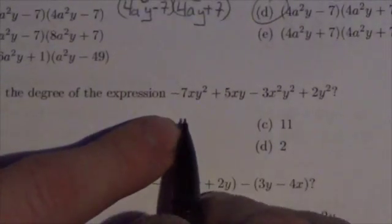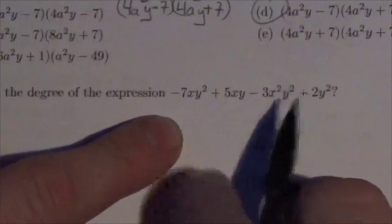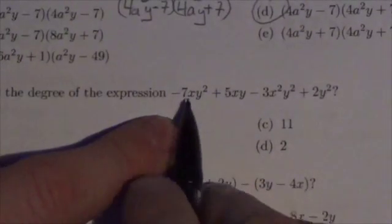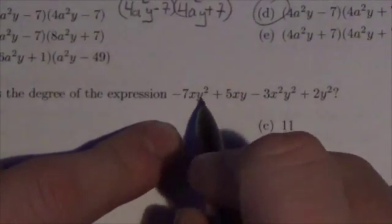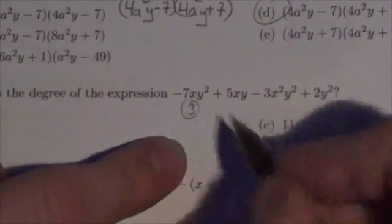Now, degree is going to be the sum of the exponents on the variables in a term. So this one right here, this 7xy squared, because this is x to the 1, y squared, that's degree 3.